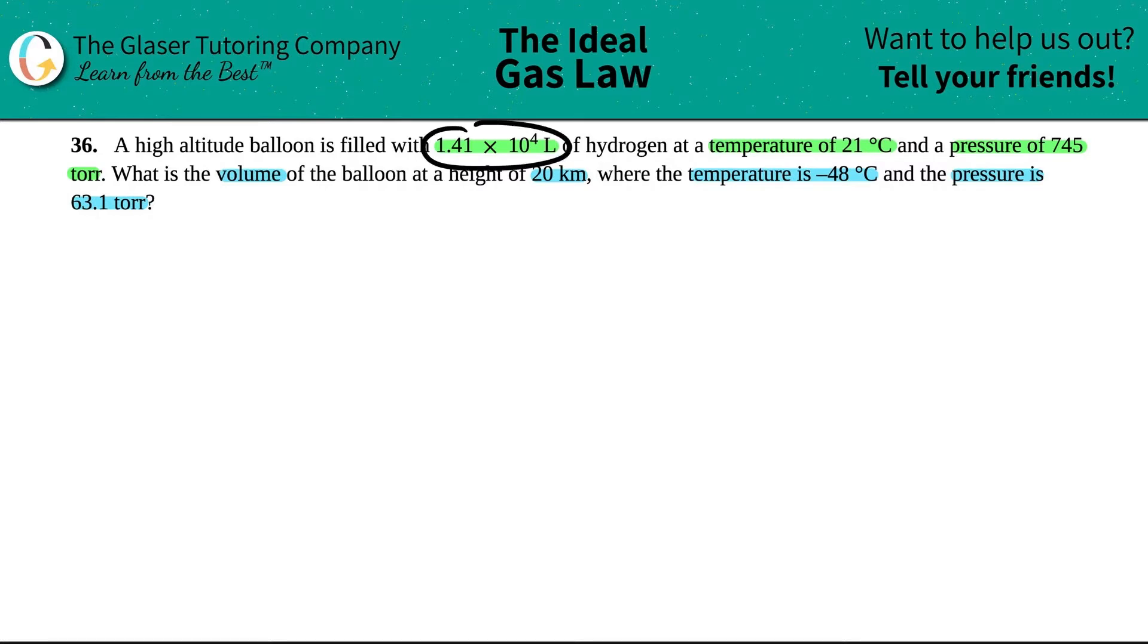They told us that we had a balloon that initially had a volume of 1.41 times 10 to the fourth liters. Now it was at this temperature, so the volume and the temperature go hand in hand. So I have a T value of 21 degrees Celsius. And this also goes together because they said that this volume was at this temperature and this pressure, so I'm going to list the pressure value and that's 745 torr.